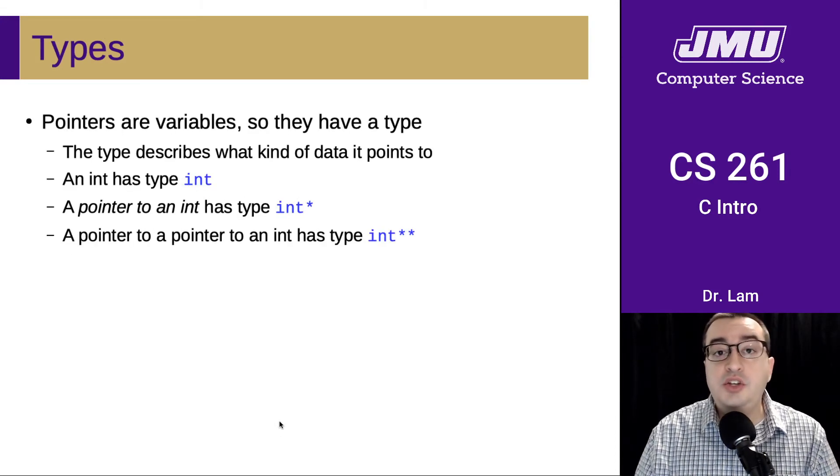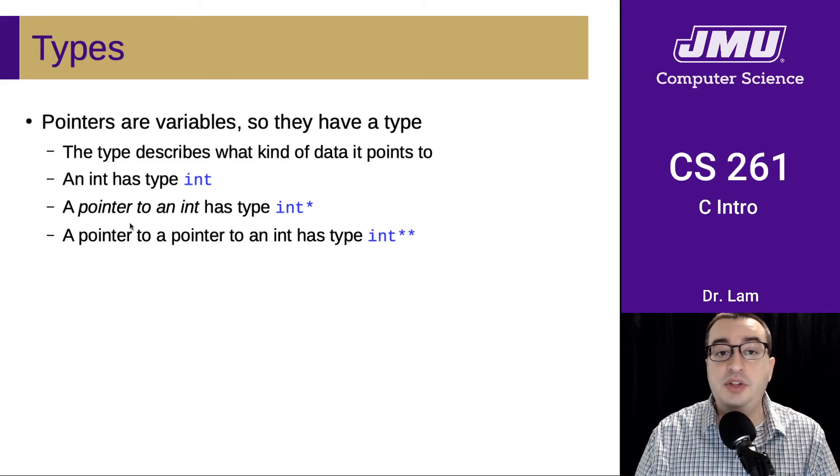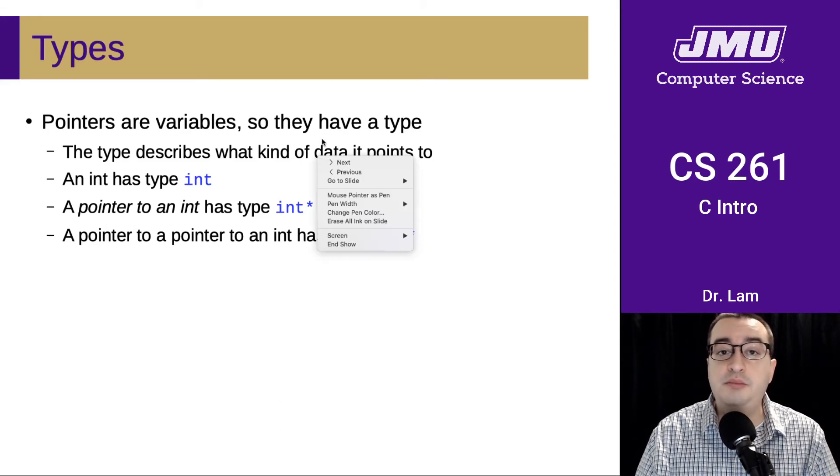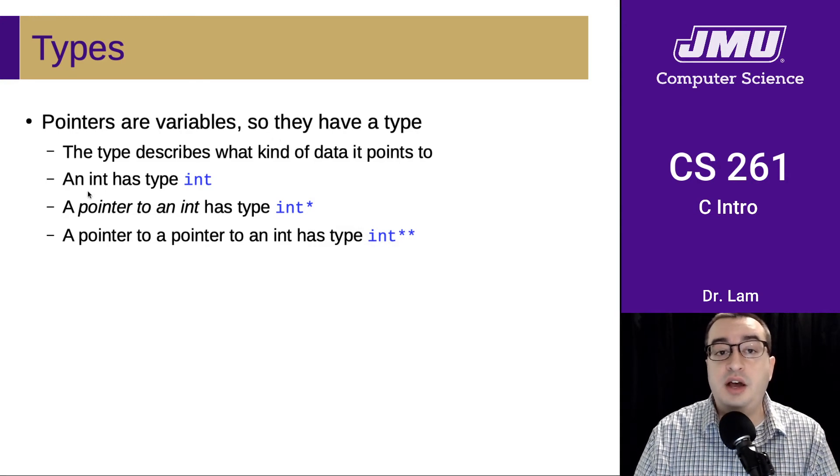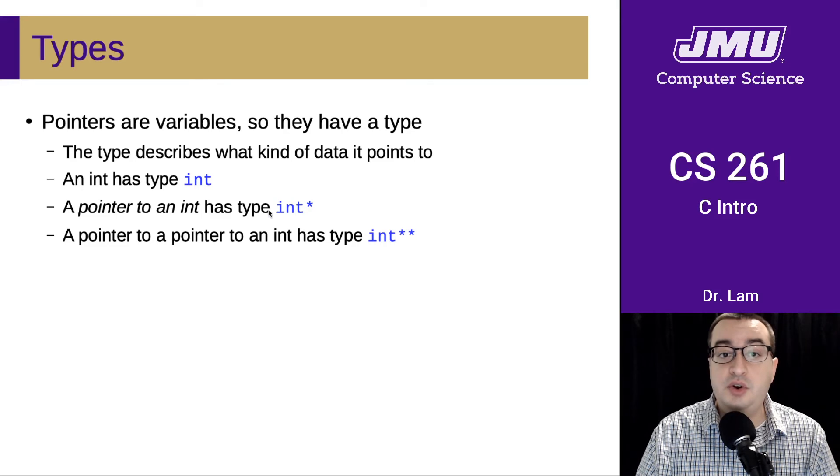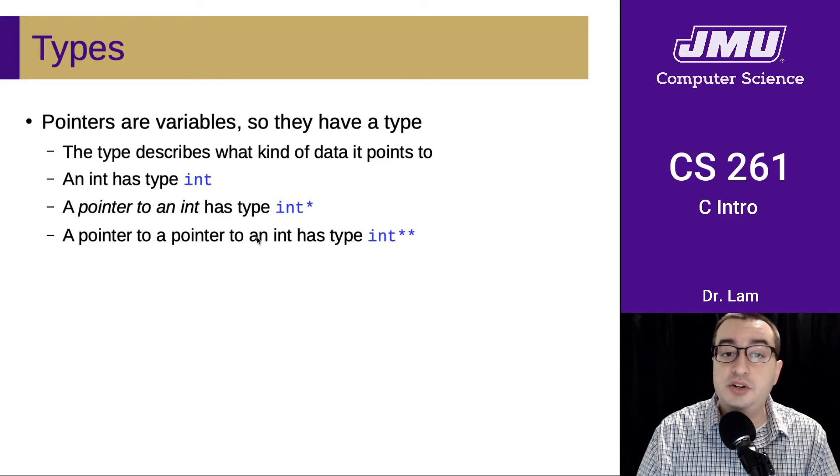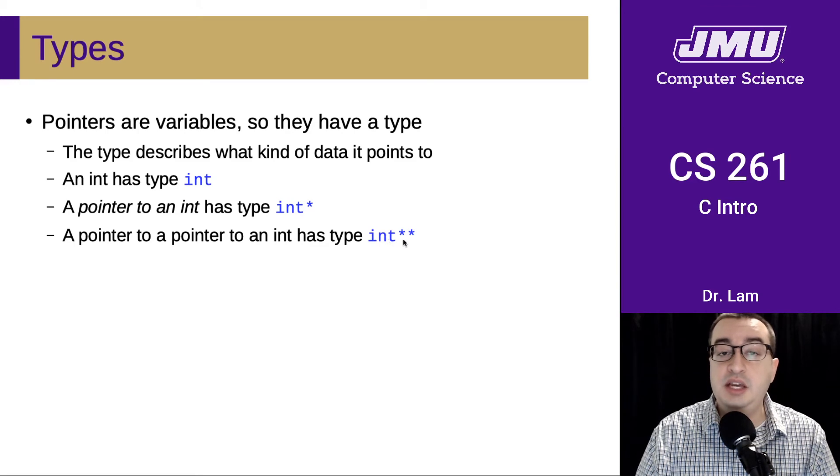Pointers are variables, so they do have a type. Like we said before, the type describes what kind of data it points to. A type has, so for instance, an int has type int. A pointer to an int is going to have type int star. And then a pointer to a pointer to an int is going to have type int star star.